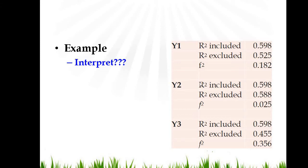Similarly, in the second model, R-square after inclusion is 0.598 and after exclusion is 0.588, and effect size is 0.025. These could be three different models or three different exogenous variables in the same model. So how to interpret them?